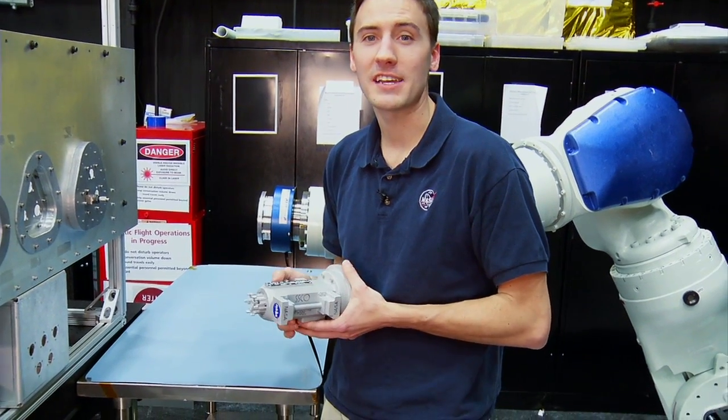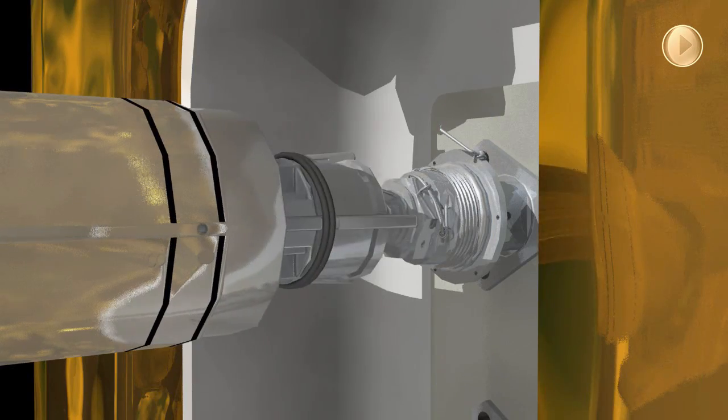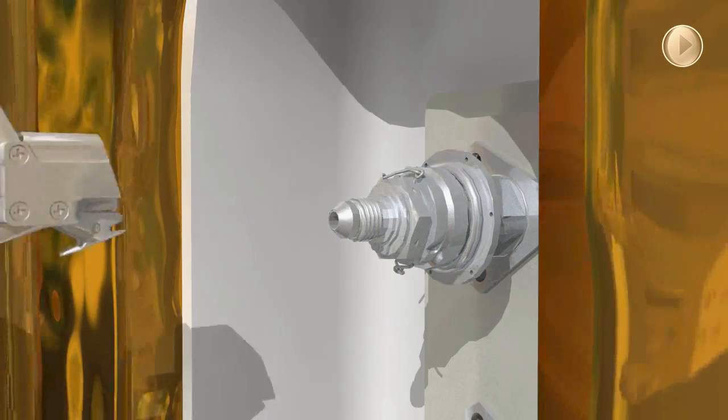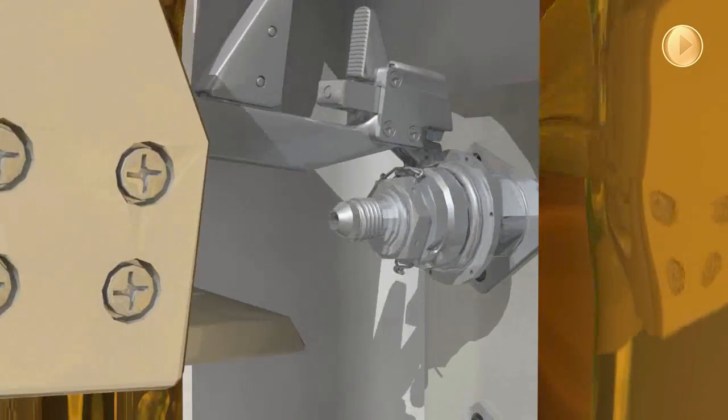Some of the challenging aspects of this task include this valve. This is a stern satellite valve that they use for filling satellite with fuel on the ground, and then it seals up, never meant to be opened again in space.